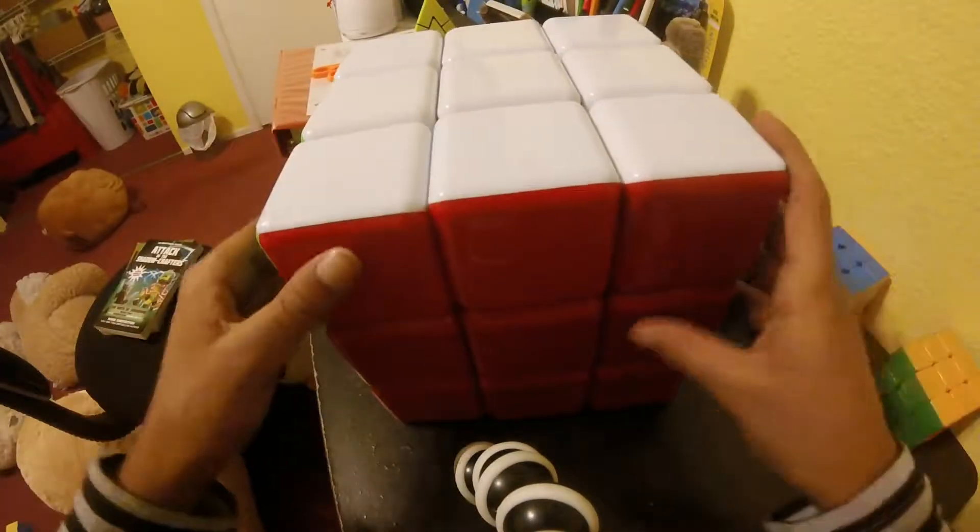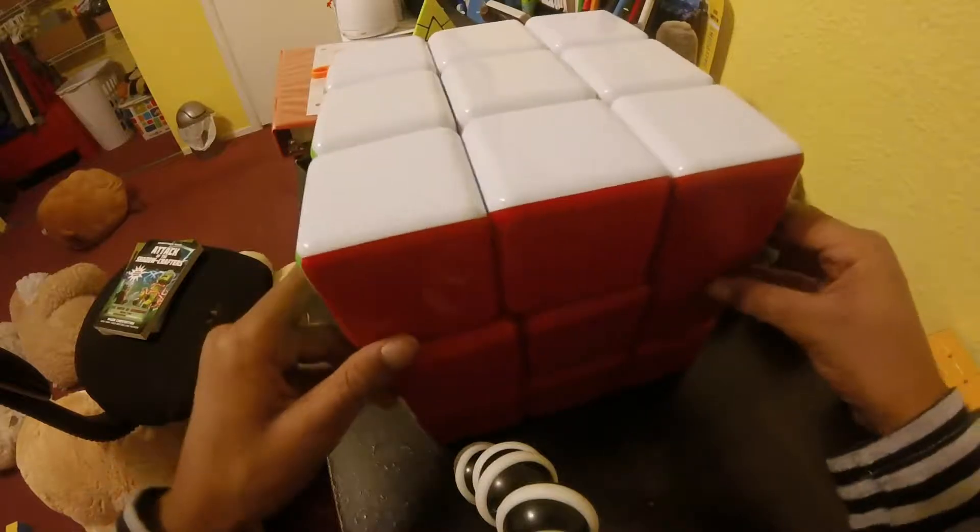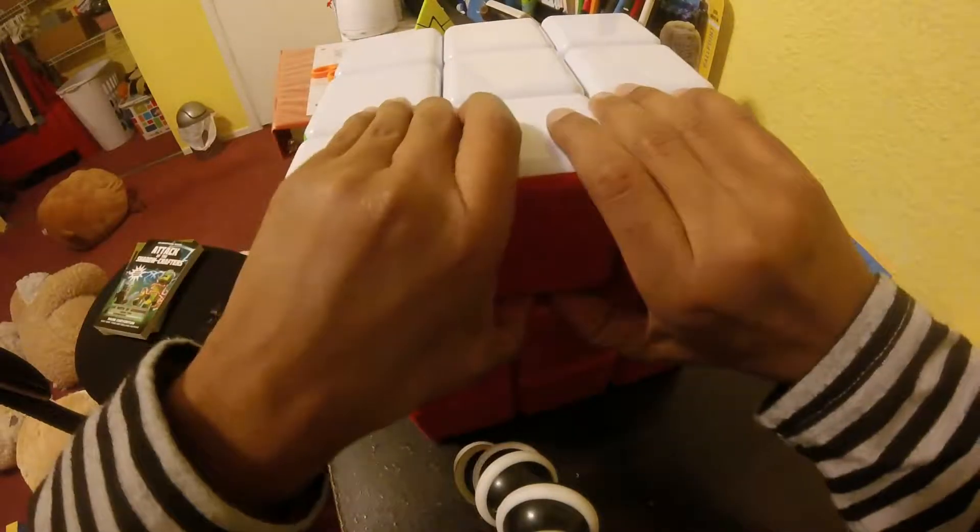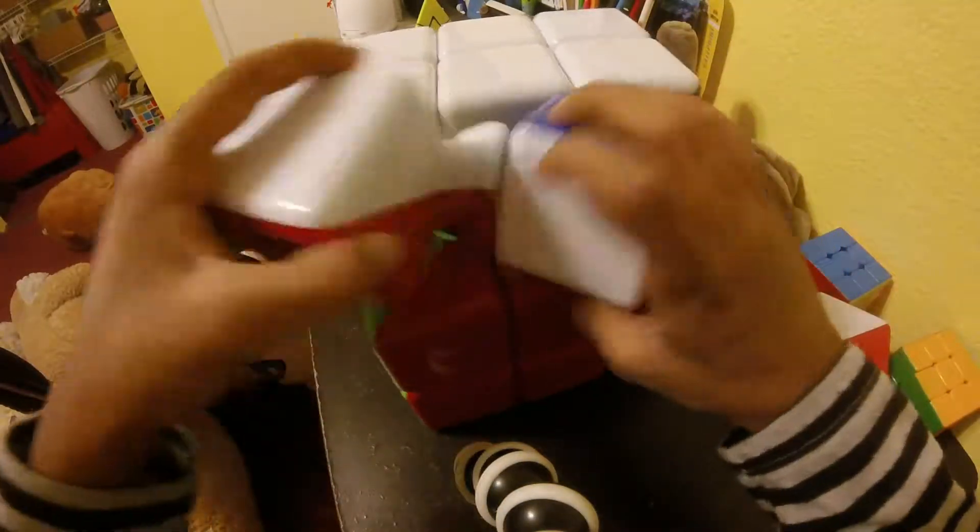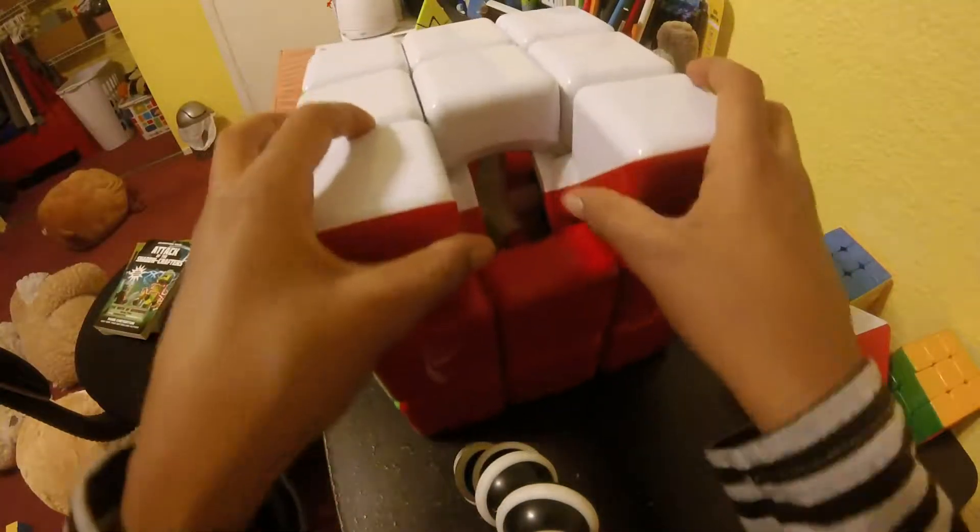This is a giant 3x3. What you do to take apart this is you turn the top layer slightly, and pull up on this edge, and it falls out. These two corners will come out the same way, and it's just the same thing from there.